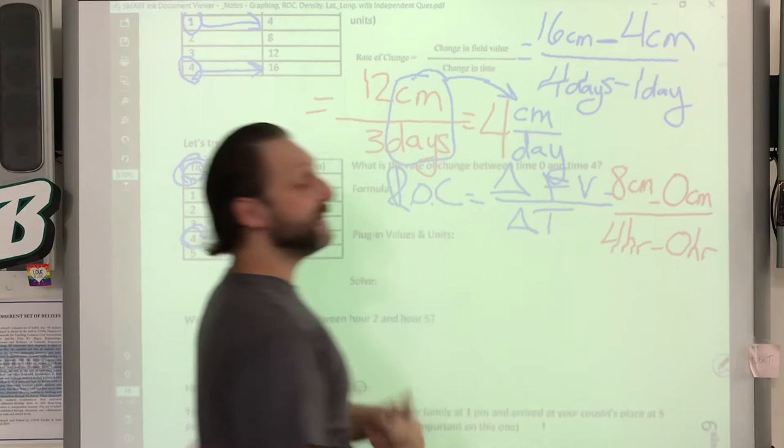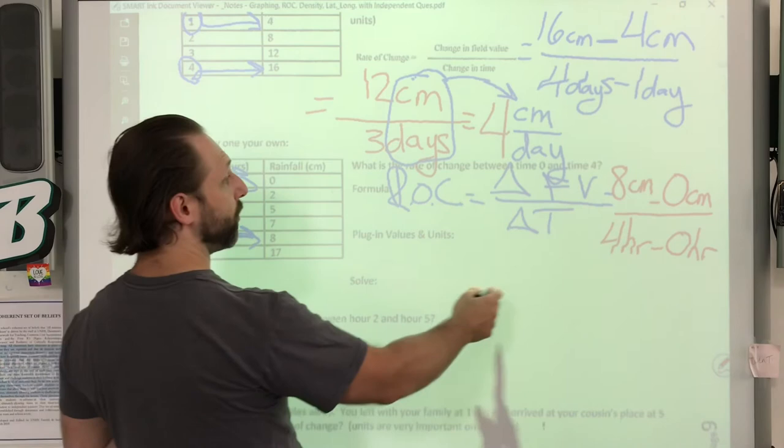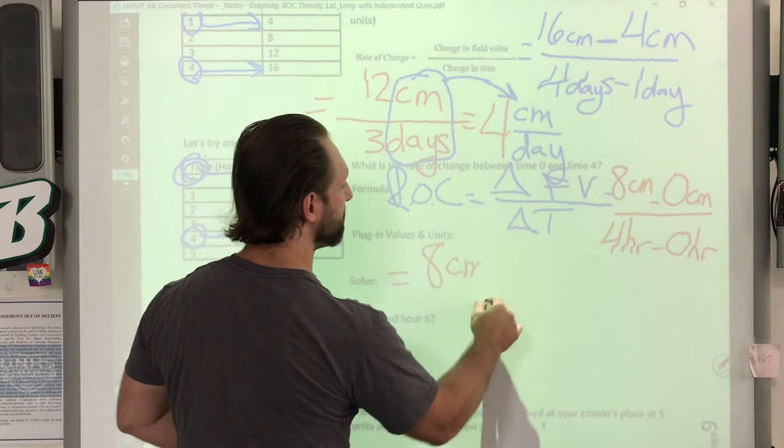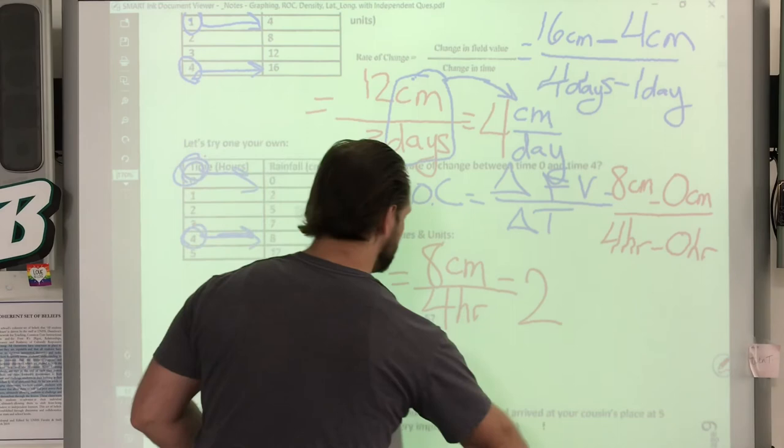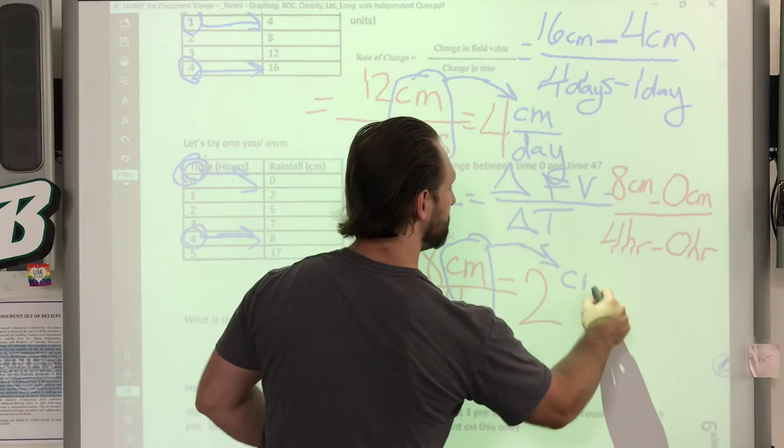So the setup. We have two field values, but I like to do time first. So four minus zero. Four hours minus zero hours. And at four we have eight centimeters. And at zero we have zero centimeters. Now we have all the data plugged in. Time to calculate. So solving it, let's reduce it, simplify it. Eight centimeters over four hours. Continue to simplify. Don't like fractions. Two. And we have to leave the units because we can't cancel them. So copy, paste. Centimeters per hour. So we have two centimeters per hour.